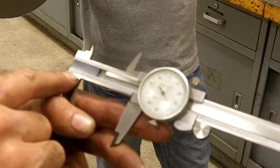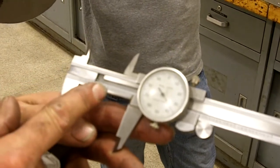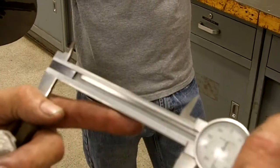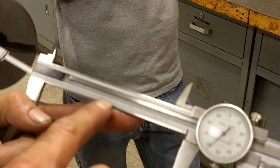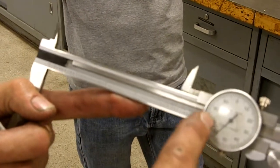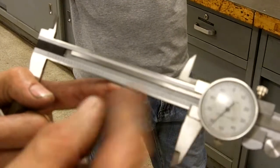Our dial caliper has scales 0, 1 through 10, and then the large number is a whole inch. So all the way out the caliper, you can see your whole inches, and you can see your tenths in between. And then the dial itself subdivides that into hundreds and thousands.